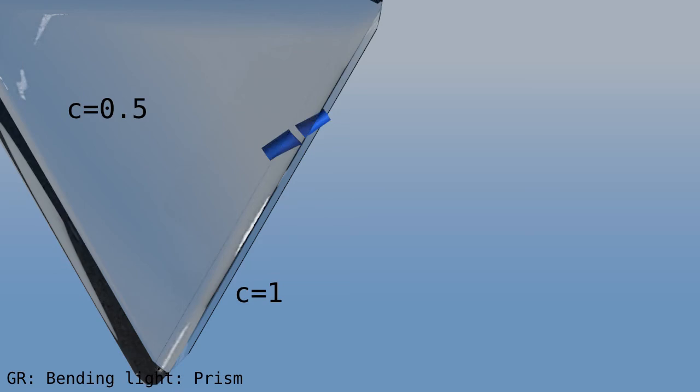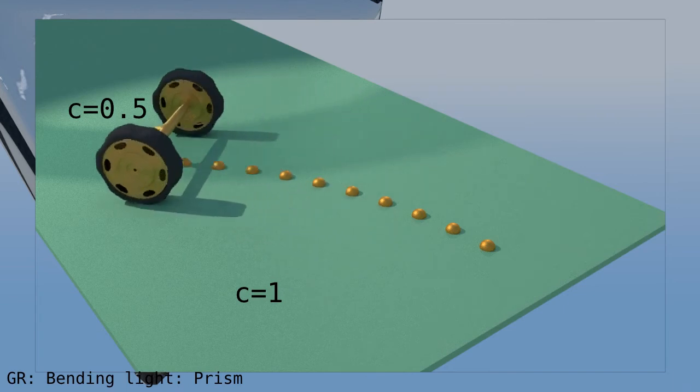Then the right half enters the glass, and they travel at the same speed. This is just like the cart that we saw in the first video, where one wheel is faster and so the cart turns.